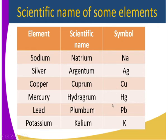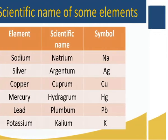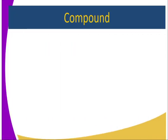If an element does not have a scientific name, its common name is used to derive the symbol. For instance, calcium gives us Ca, and oxygen gives us the symbol O. There are other elements with scientific names, but we will use these few examples for this lesson.